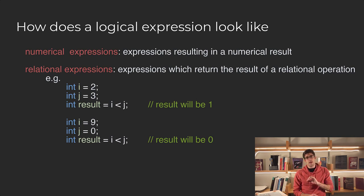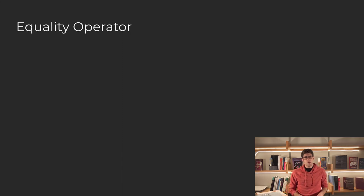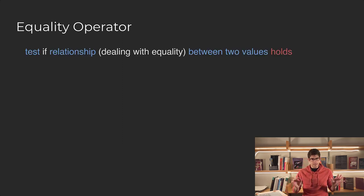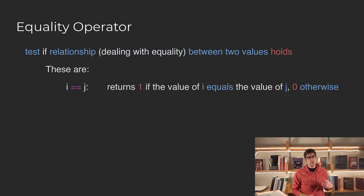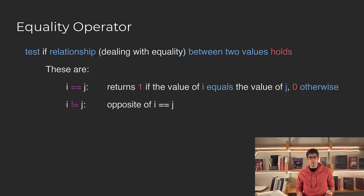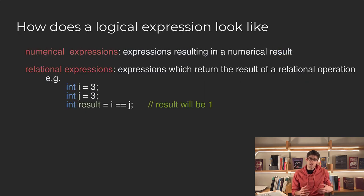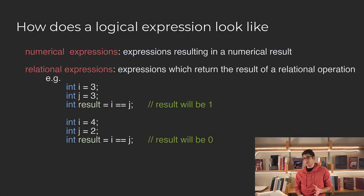We also have equality operators, which again just test if a relationship holds, but this relationship has to deal with equality. For example, i is equal to j, or i is not equal to j. And again, if the condition is true, we return 1, and if the condition is false, we return 0.